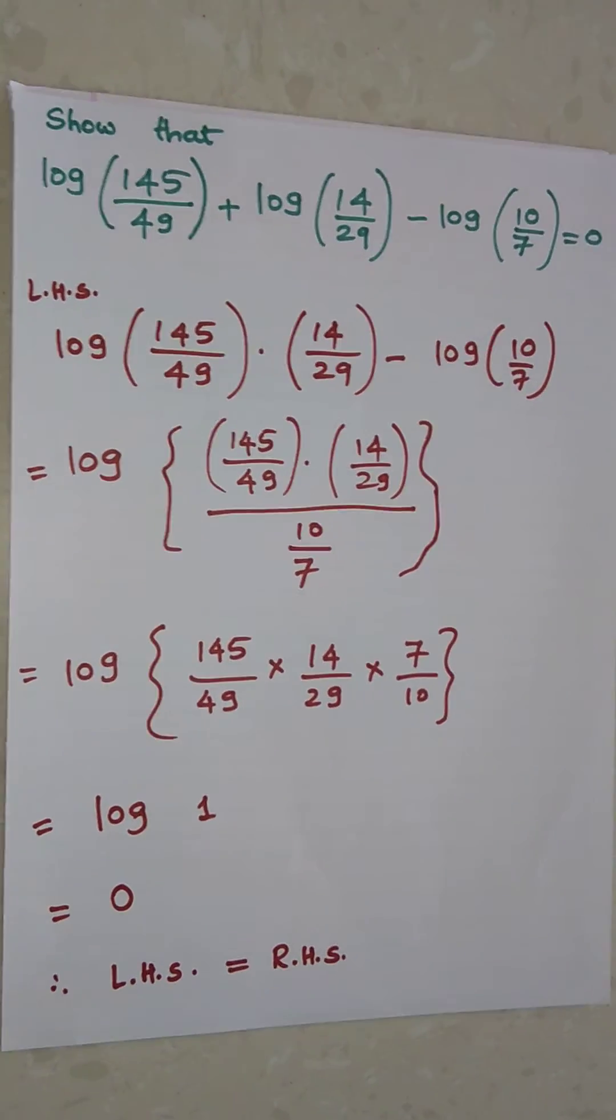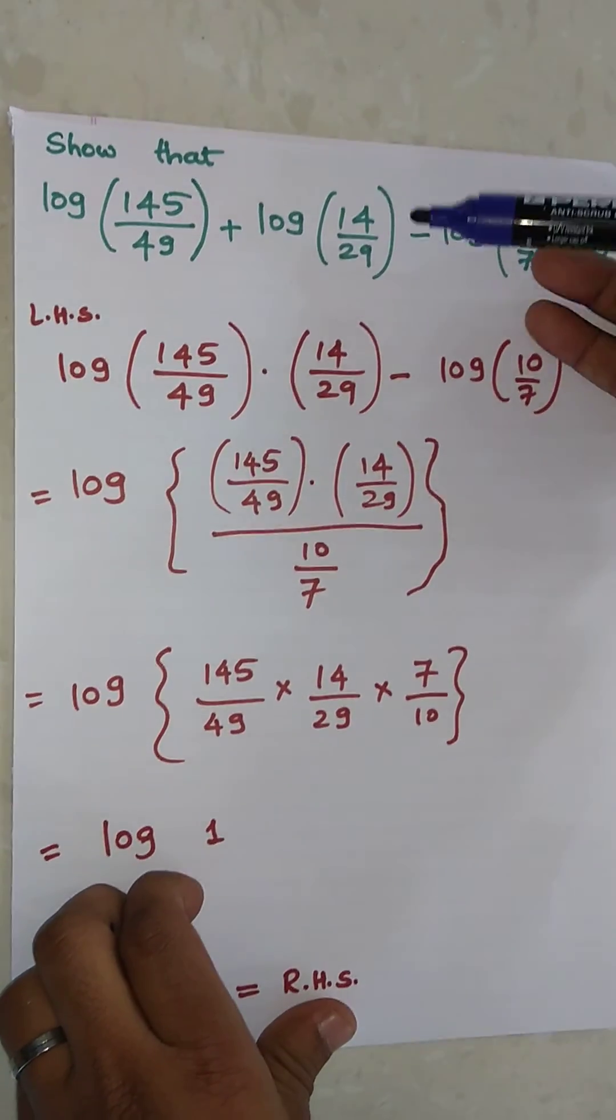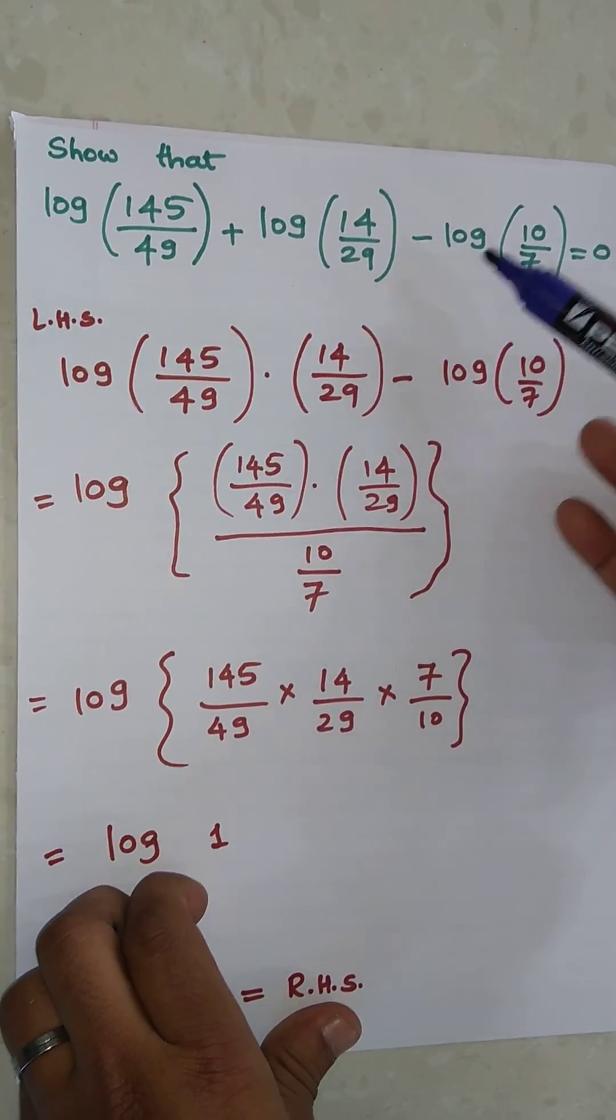Hello friends, today's topic is logarithm. Show that log(145/49) + log(14/29) - log(10/7) = 0.